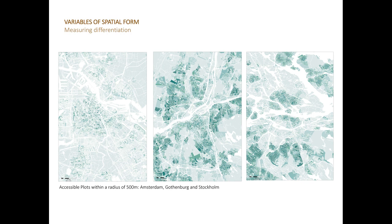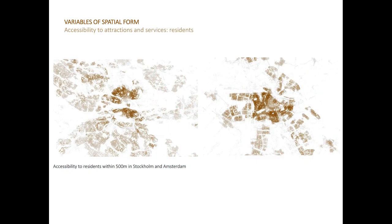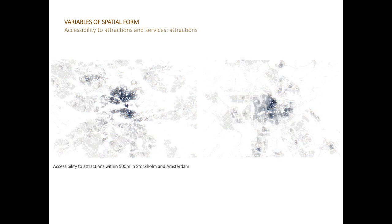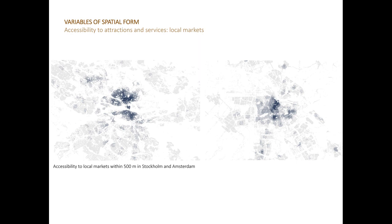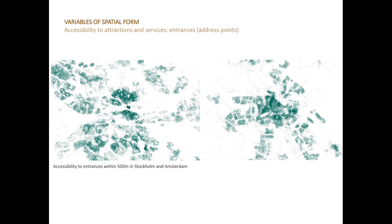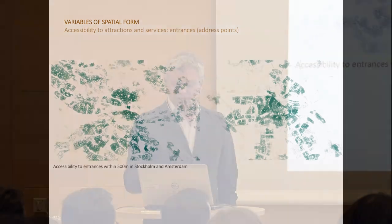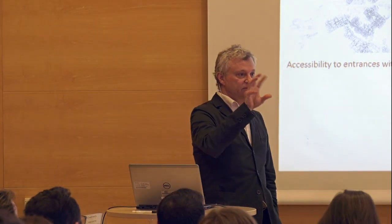We can also calculate accessibility to whatever attractions or amenities you have around you. For instance, accessibility to residents within 500 meters in Stockholm and Amsterdam, or attractions both public and private, or local markets and economic activity, or architectural things like entrances. Anything you can give a geographic location, you can make an accessibility analysis of. The interesting work is making combinations of these.